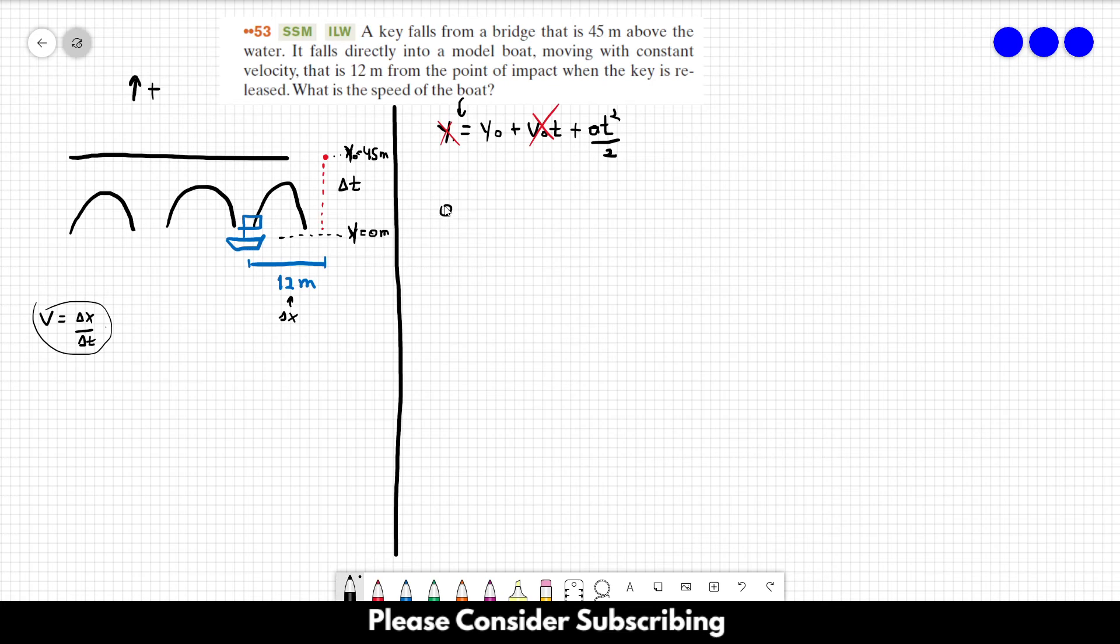So zero equals y₀ plus at² over 2. So minus y₀ times 2 over a, square root, equals t.